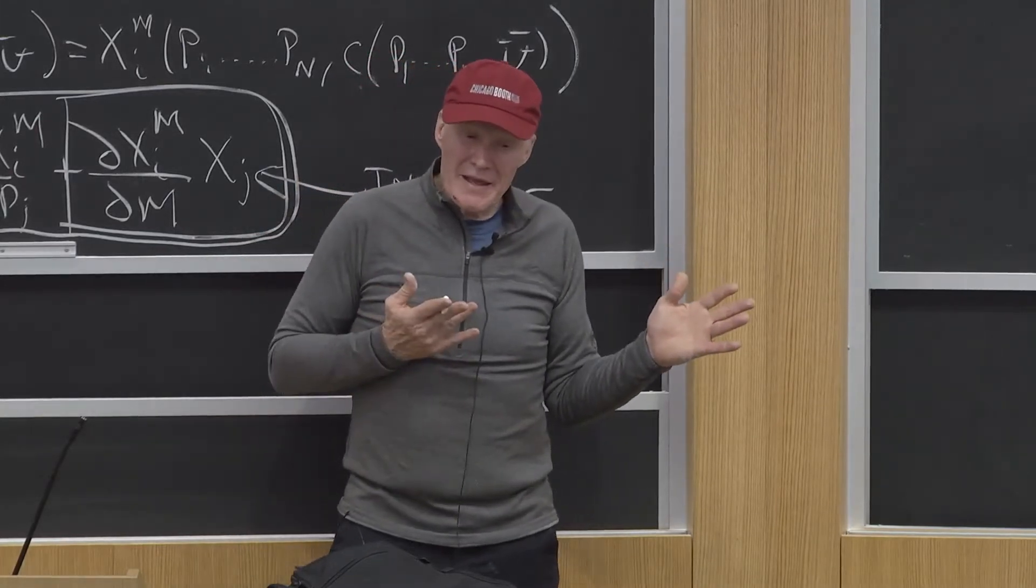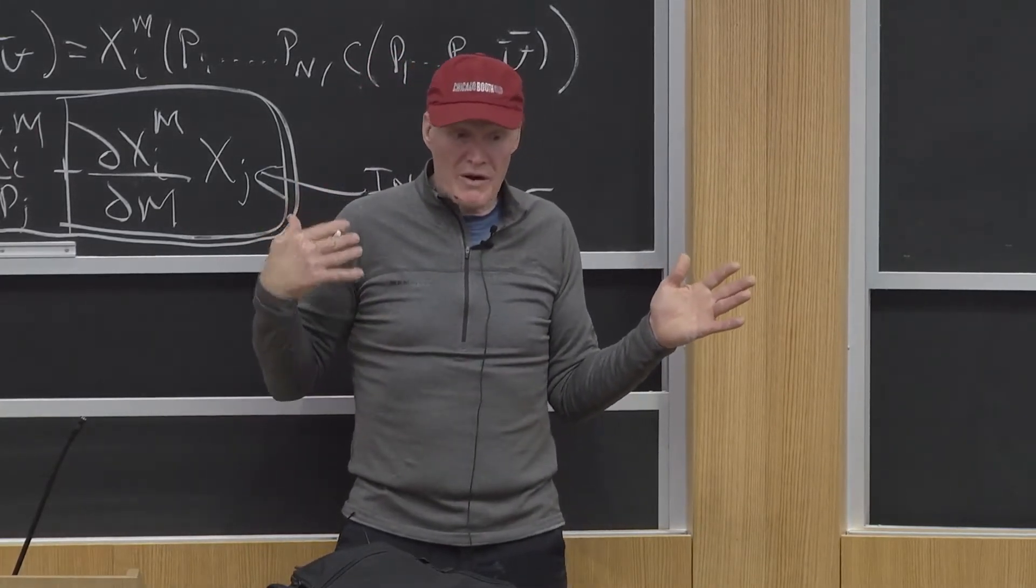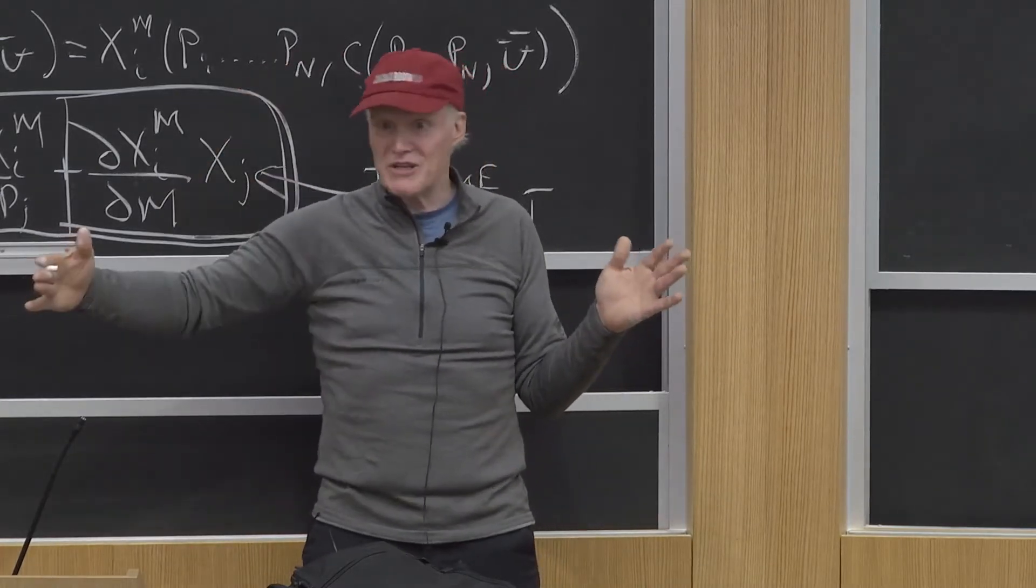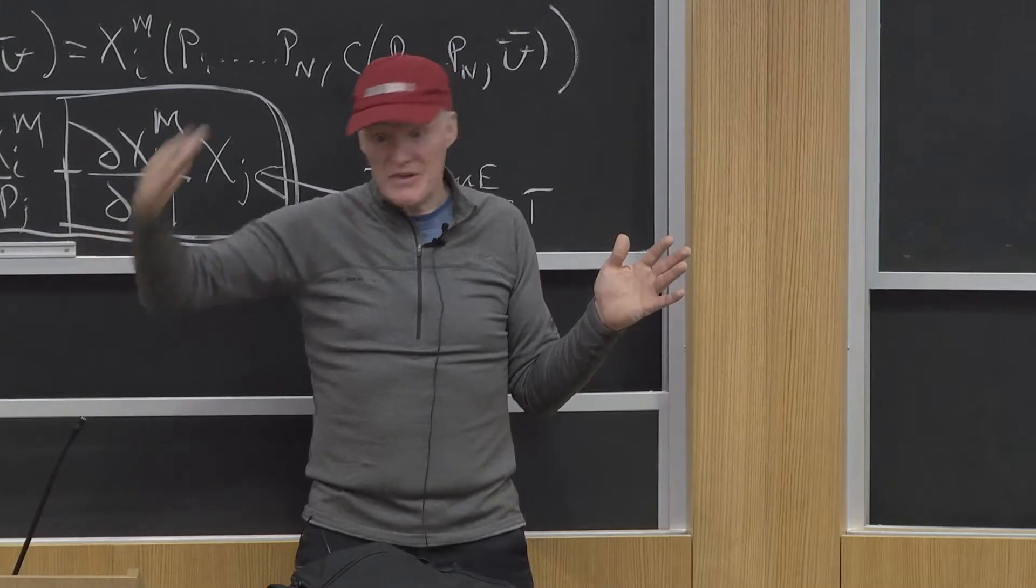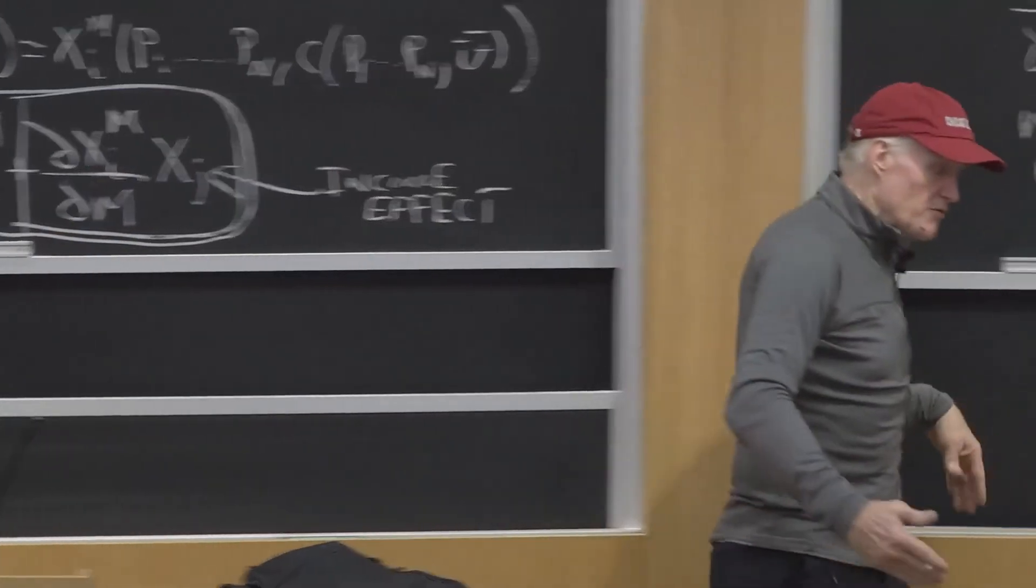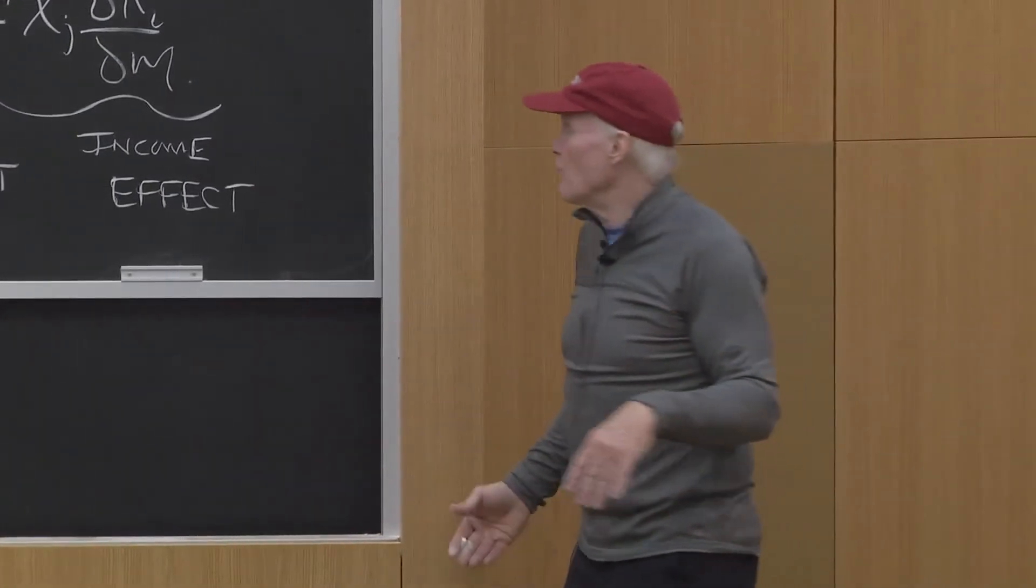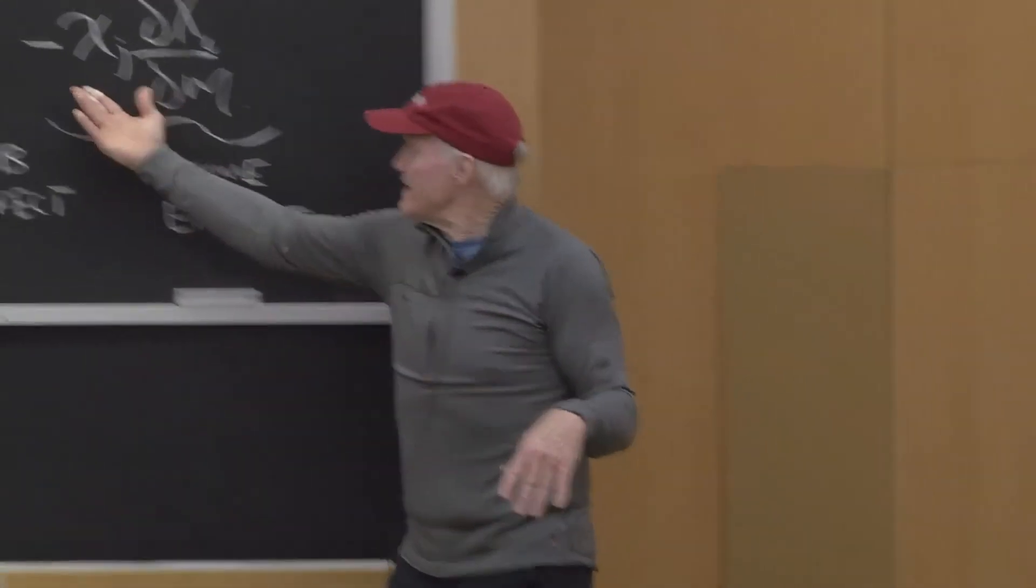The way to think about it is back to where we started the quarter. I'm basically approximating my indifference curve by the budget line. And it says, that loss is roughly a $10 equivalent. Go back to the first day we talked about moving along that budget line. So that's XJ.